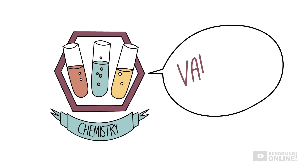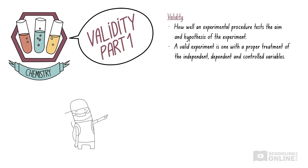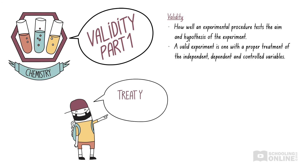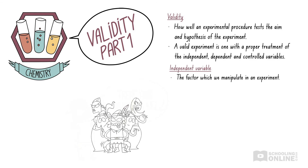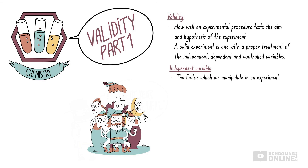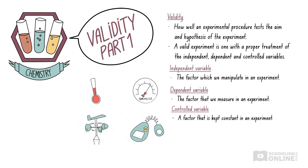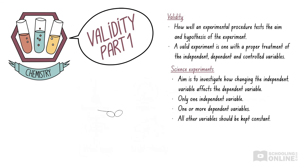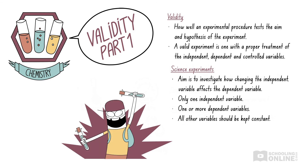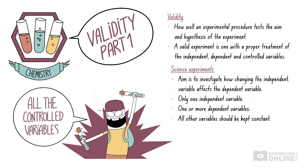Let's revise what we've learned in this lesson. Validity refers to how well an experimental procedure tests the aim and hypothesis of the experiment. A valid experiment is one with proper treatment of the independent, dependent, and controlled variables. The independent variable is the factor which we manipulate or change. The dependent variable is the factor that we measure. A controlled variable is a factor that is kept constant. An experiment should only have one independent variable and one or more dependent variables. All other variables should be kept constant so that we are certain the independent variable is the only factor causing the observed change in the dependent variable.